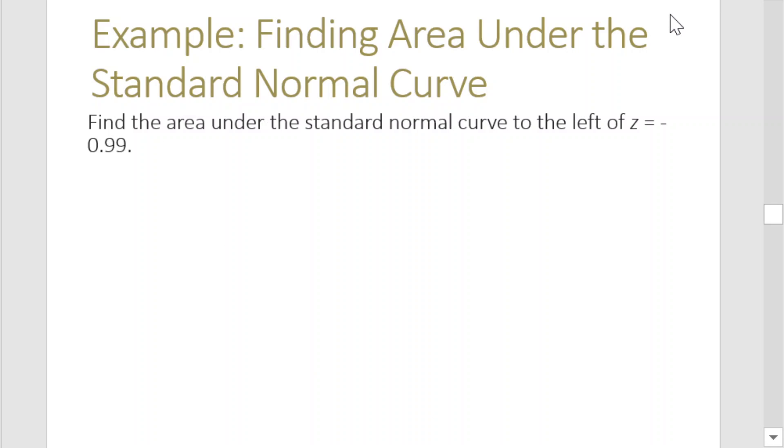We will now start with some examples for finding area under the standard normal curve. So we have here the problem: find the area under the standard normal curve to the left of z equals negative 0.99.